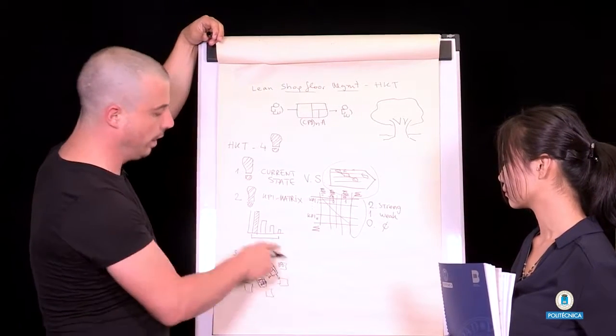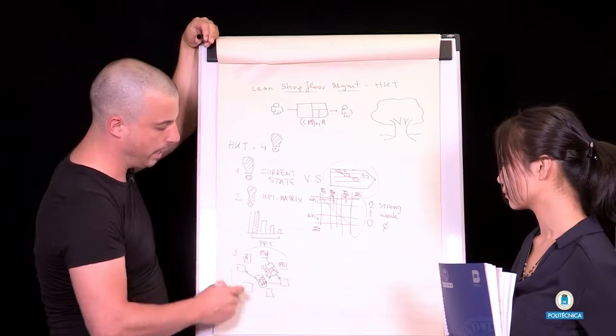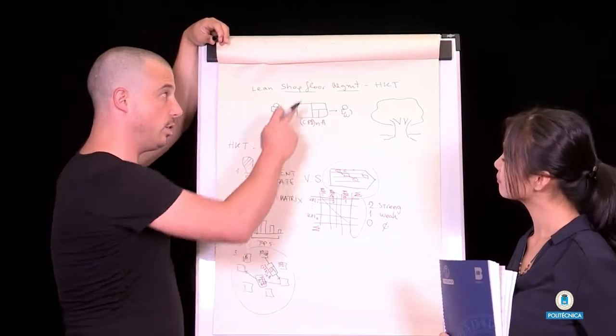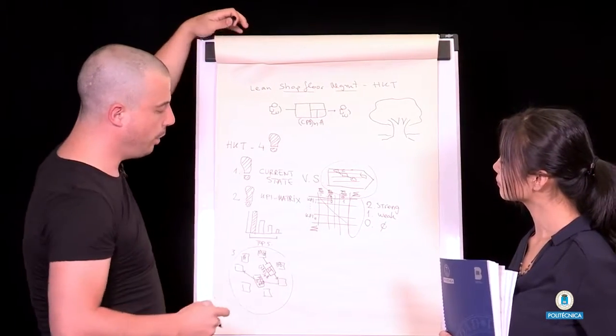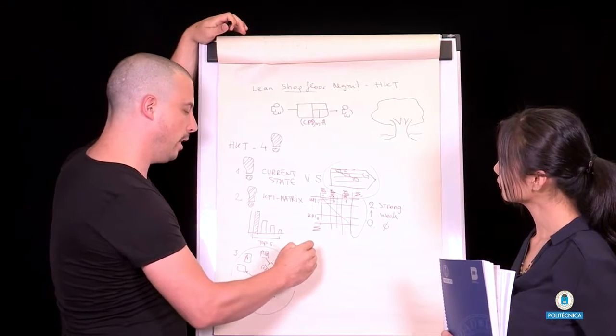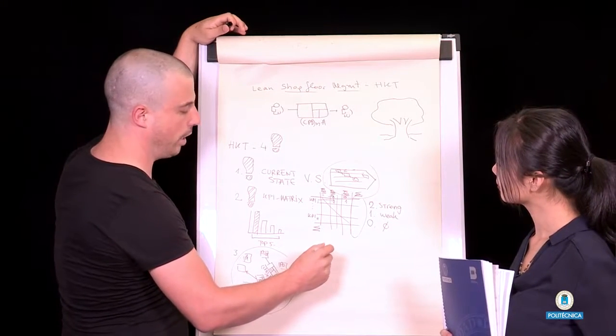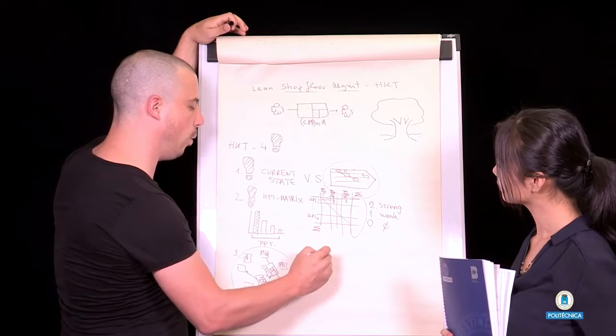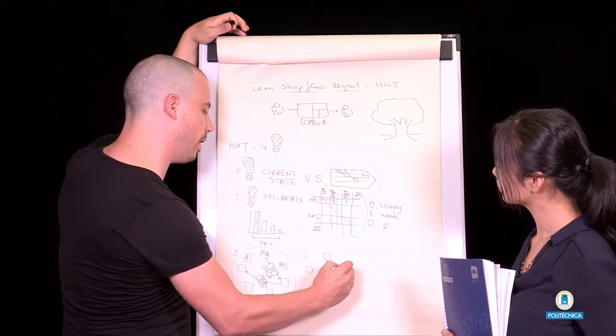And after doing this, because this is very complicated and cannot be operationalized as a shop floor management method, what we do is we take the hierarchical organizational chart in which all the process owners are listed.